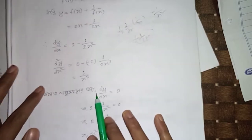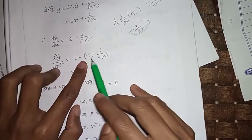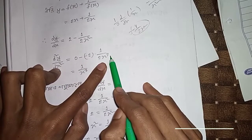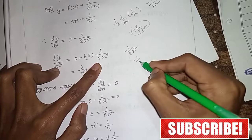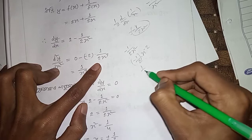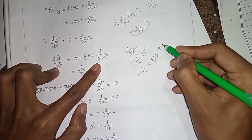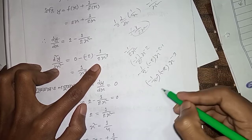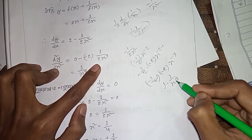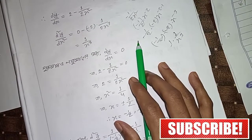The second derivative d²y/dx² equals minus 2/(2x³), which simplifies to minus 1/(2x²) minus 1/(2x²). This becomes minus 1/x³ plus 1/x³, giving us 1/x³.